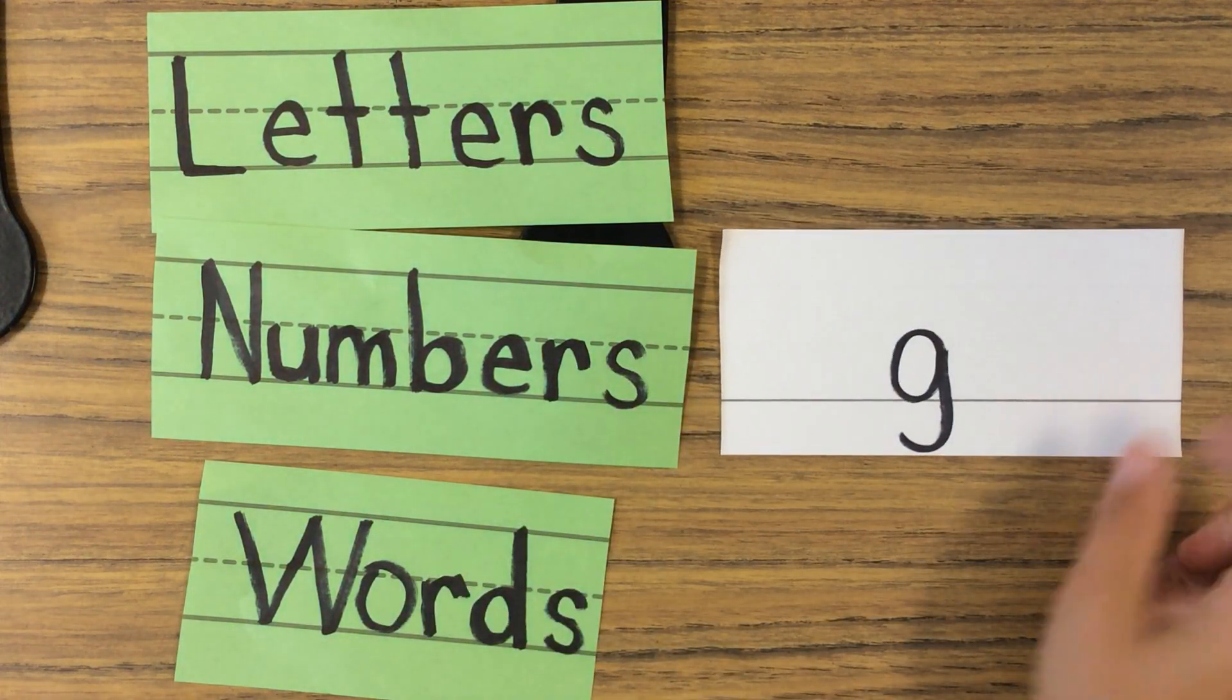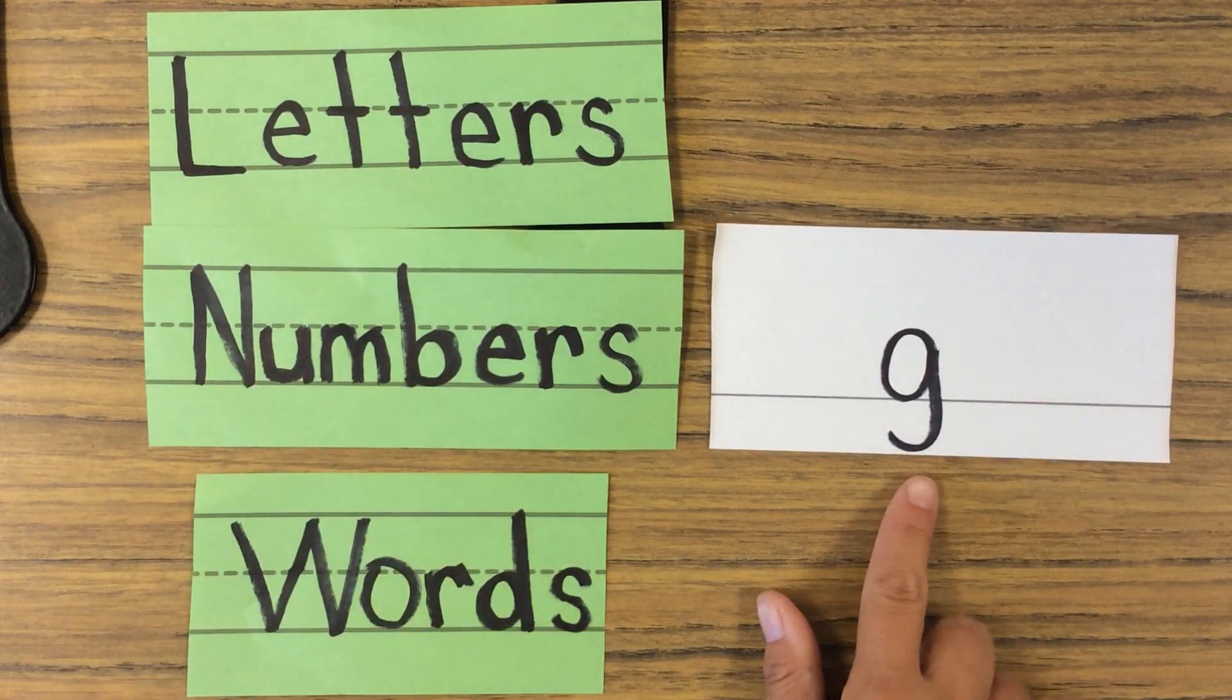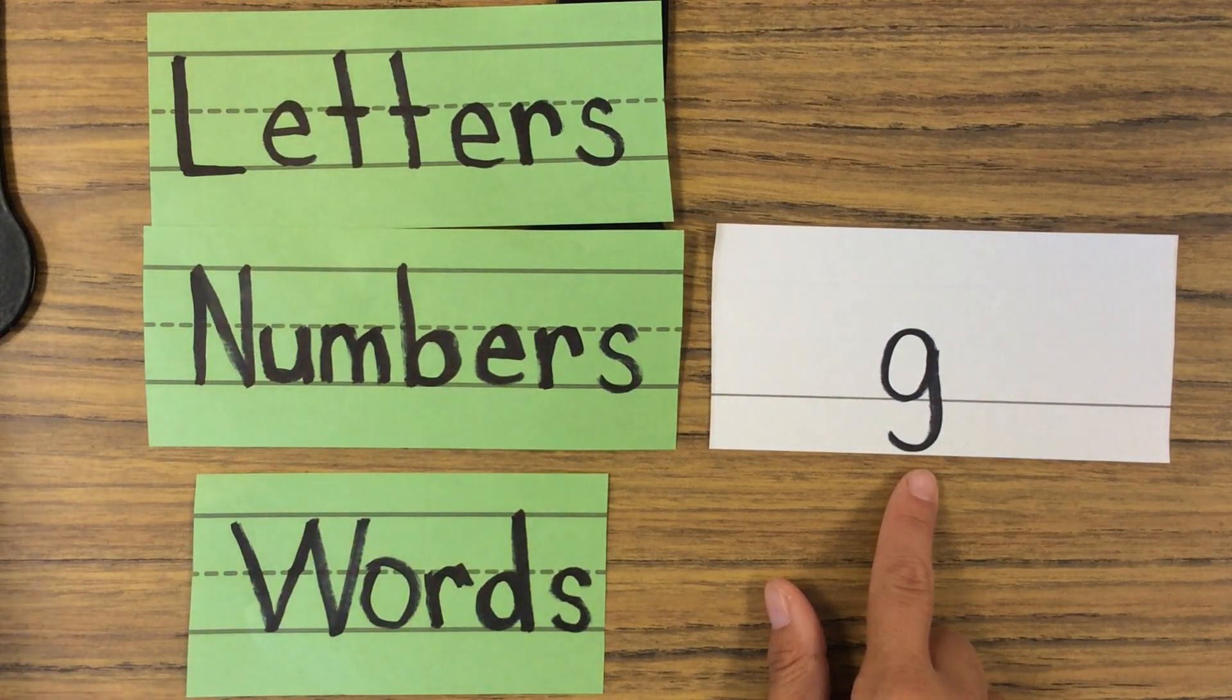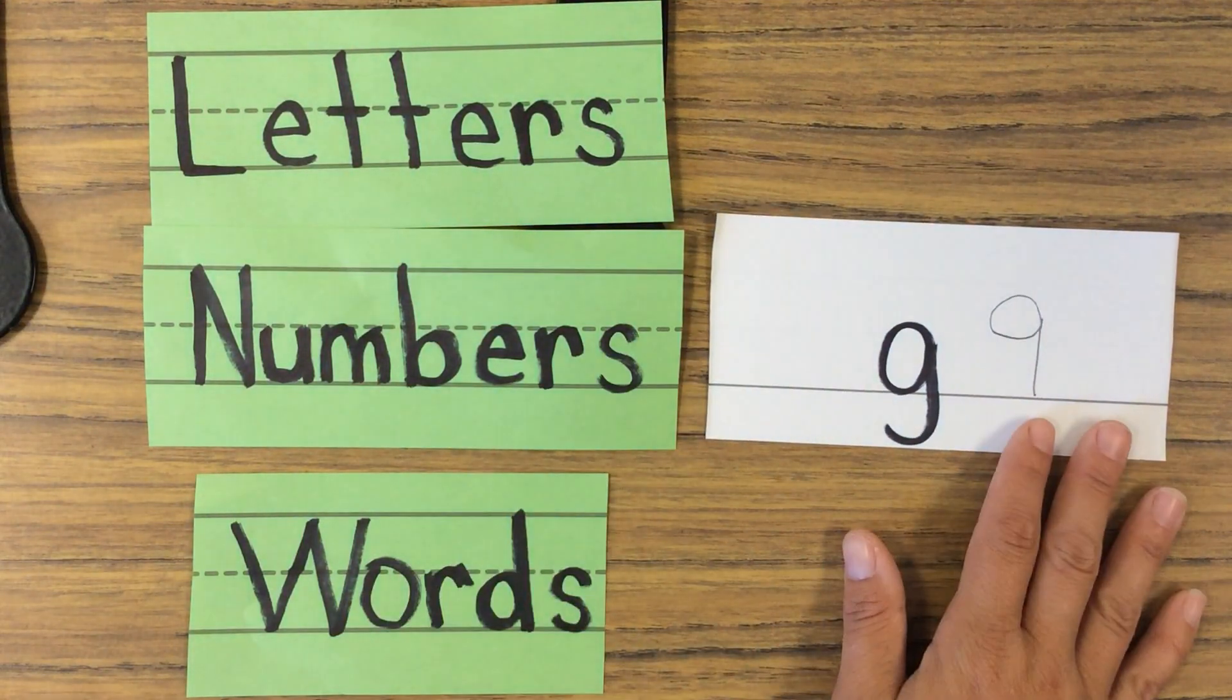This says G. Now some of us got tripped up a little bit, that kind of looks like a nine, but I'm going to show you what a nine looks like. A nine looks like this, so they're close.